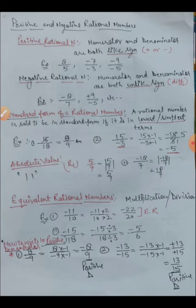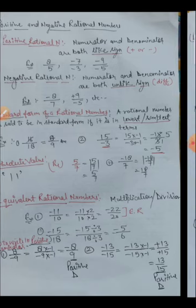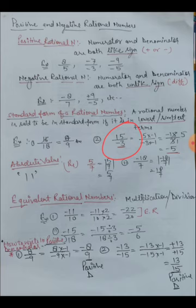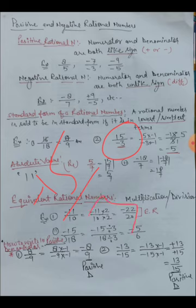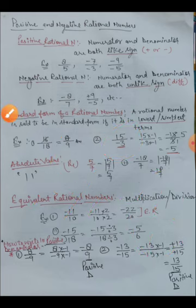Continuing the example of fifteen upon minus three: after converting to positive form we get fifteen upon three. Now both fifteen and three are divisible by three. Three ones are three, three fives are fifteen. So dividing gives us minus five. The standard form of fifteen upon minus three is minus five.